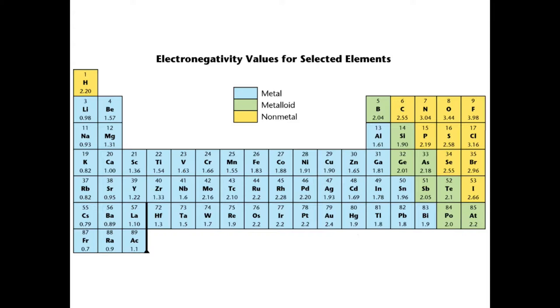If you look at the top right of the periodic table, fluorine, if you look at the value there, it's 3.98. It is the highest value of any element on the periodic table, meaning fluorine is very electron hungry, has a high electron affinity, has a high electronegativity.